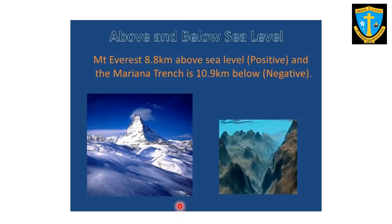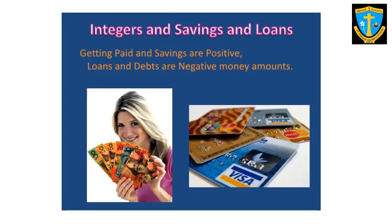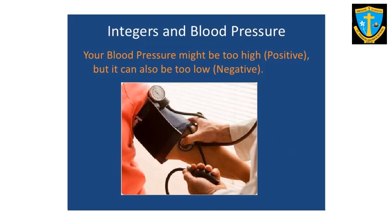Above and below sea level: Mount Everest is 8.8 km above sea level, so we denote it with a positive sign. The Mariana Trench is 10.9 km below sea level, so we denote its depth with a negative sign. At the summit of Mount Everest, the available oxygen is below the required level for human survival. For savings and loans: income and savings are positive, while loans and debts are negative. For blood pressure: high blood pressure is positive, and low blood pressure is negative.